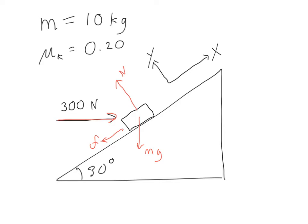So we've now basically set up a free body diagram, and I've already chosen a tilted coordinate system so that our acceleration is completely in the x direction. In the y direction, the block won't be able to move up and down, so it will definitely have zero acceleration in the y direction.